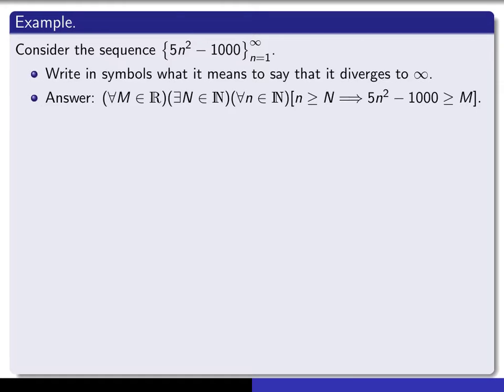So I just simply wrote down the previous working definition with this particular sequence. So it's for every real number capital M, there exists a natural number capital N, such that for every natural number little n, if little n is bigger than or equal to capital N, then 5n squared minus 1,000 is bigger than or equal to capital M.